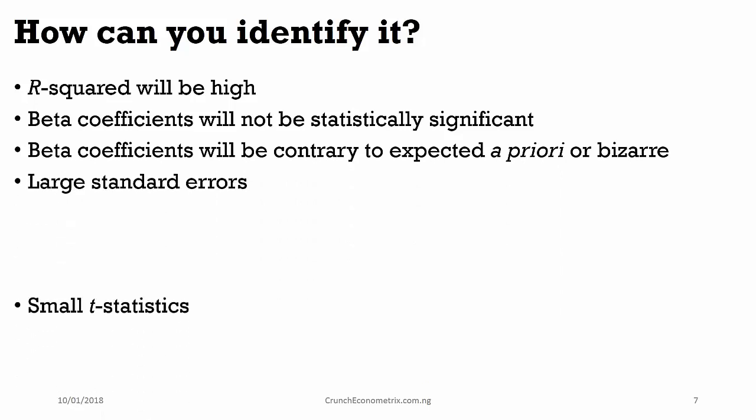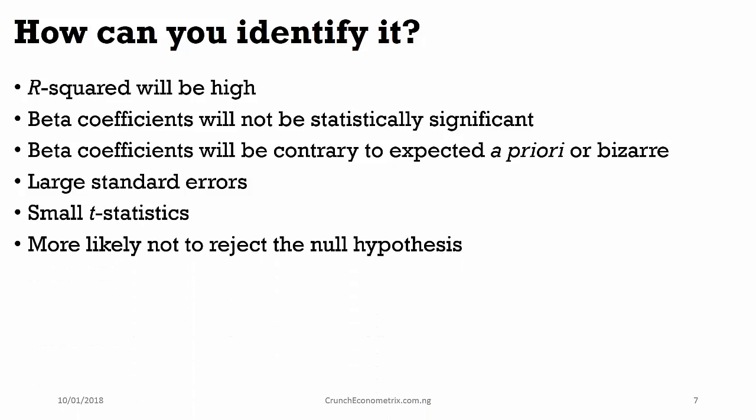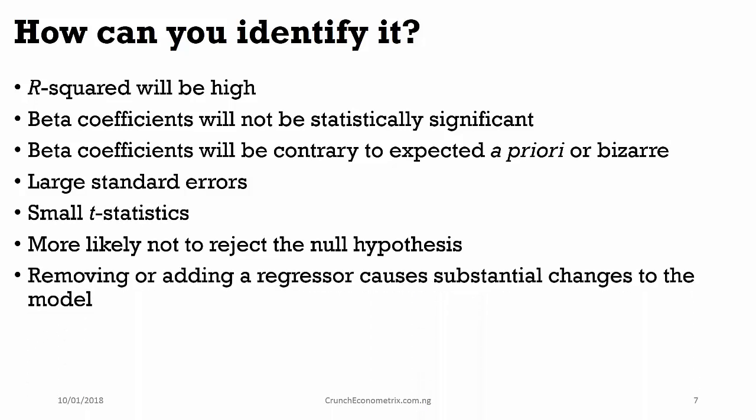You will observe large standard errors, small t-statistics, and you are more likely not to reject the null hypothesis, thereby committing what we call a type 2 error.